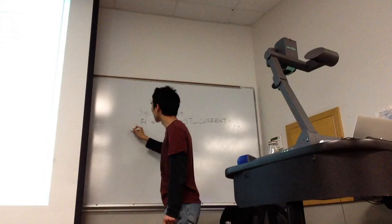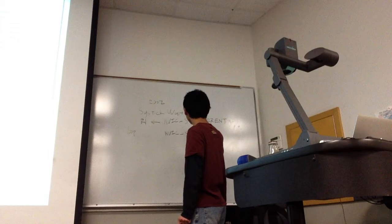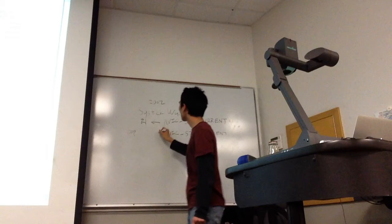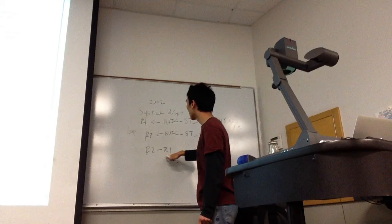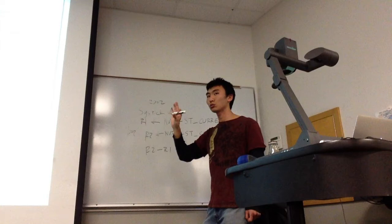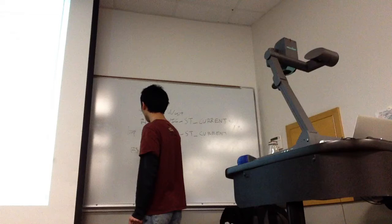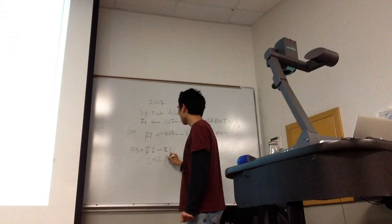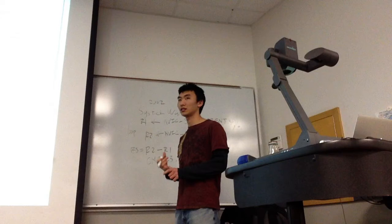Then it goes into a loop. In the loop, it loads the NVIC ST Current register again into R2, and then it subtracts R2 and R1 — that's R3. It's calculating the difference between your current time and the time when you called this function. It then compares R3 with R0. When they're the same, you exit this function. That's how it delays for however many nanoseconds you want.